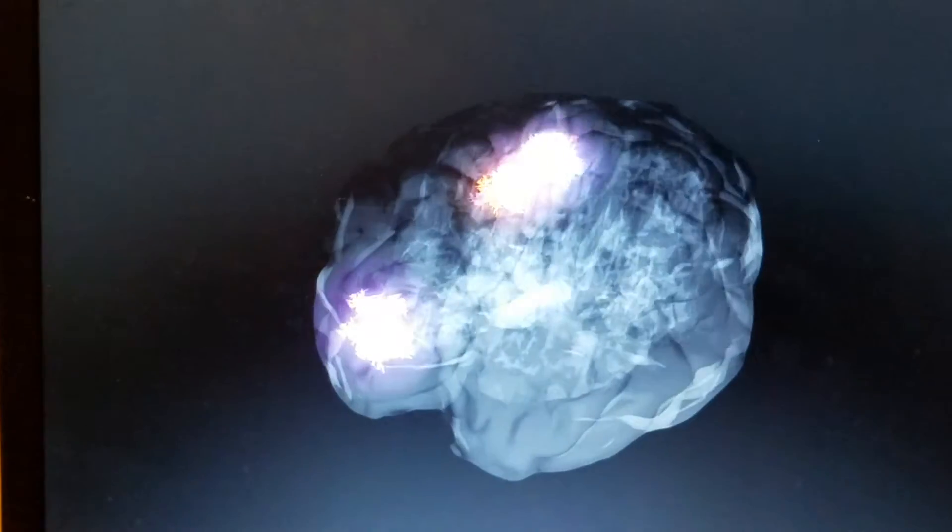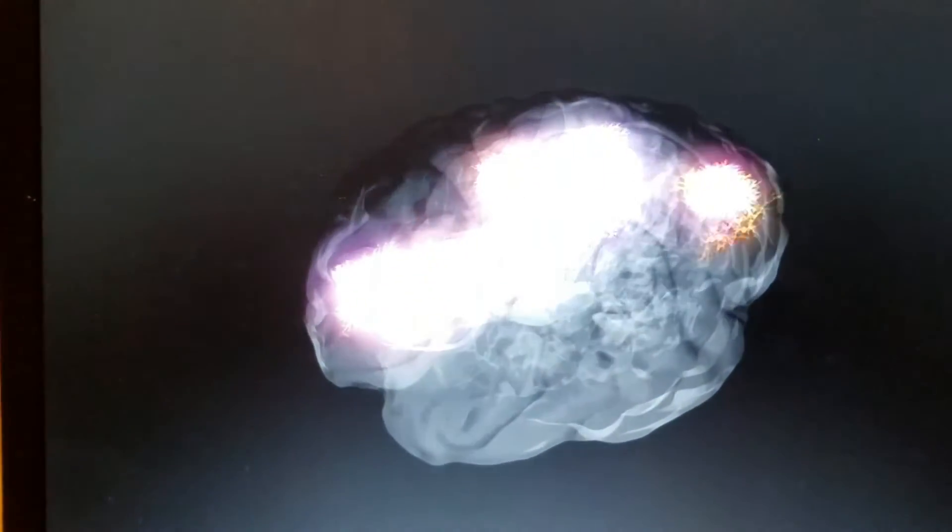When two people have the same set of oscillations, we call that neural synchrony. We can actually see it now in real time, when it happens, as it happens.